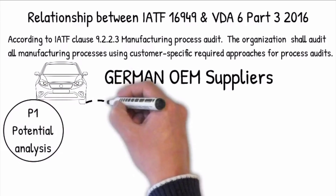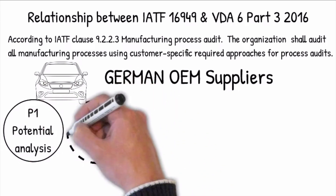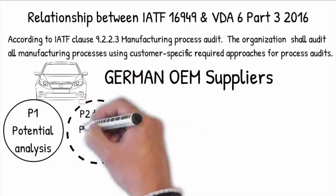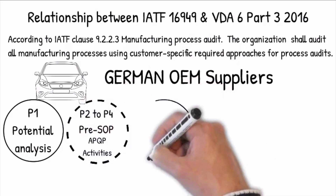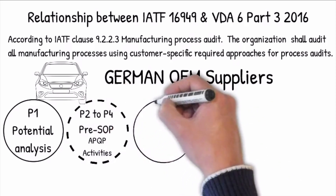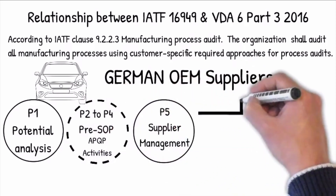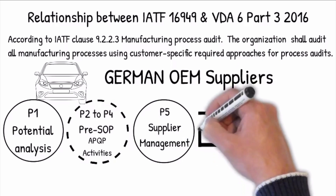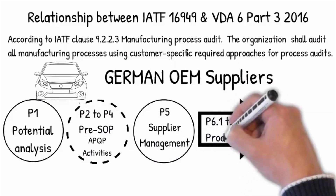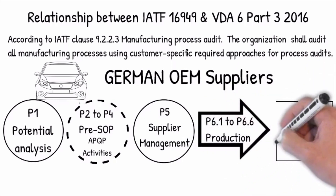In the next episode we will explain how to implement the VDA process audit, starting with the supplier potential analysis audits, audits in all the project phases, selecting and developing the suppliers and material control, and auditing the full production phase from incoming to dispatch, and verifying the customer support.